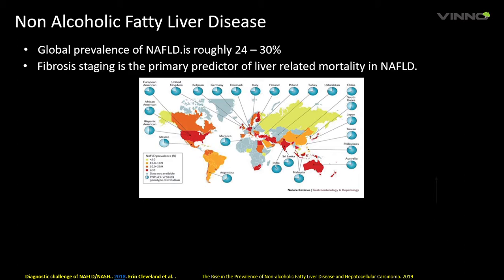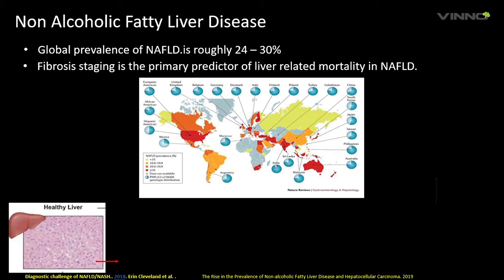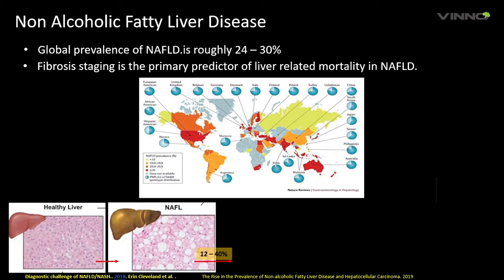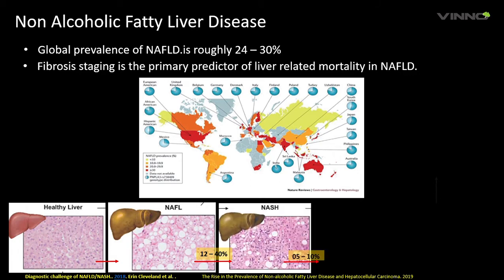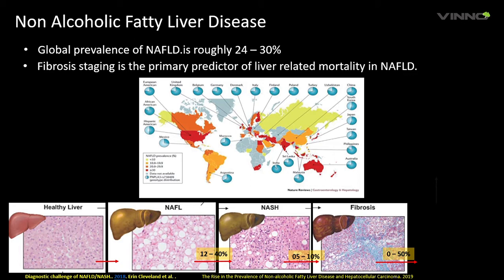Fibrosis staging is the primary predictor of liver-related mortality in NAFLD. Biopsy is the reference standard, however it has limitations such as pain, repeatability, sample size of a few millimeters of tissue, and intra-observer variability. Histologically, NAFLD starts with the first stage as NAFL — a simple accumulation of fat — which progresses to NASH (non-alcoholic steatohepatitis), fat with inflammation, that might progress to fibrosis, then to hepatocellular carcinoma, or complete structural damage of the liver as cirrhosis.